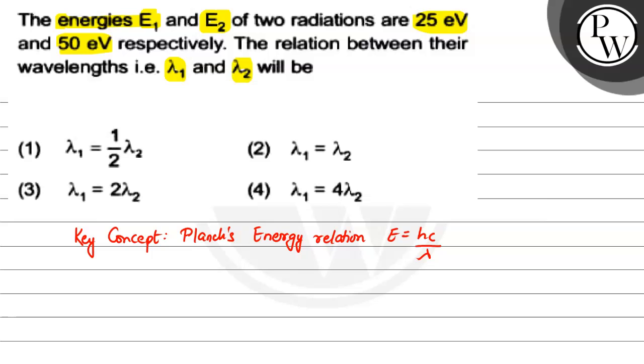So if we write from whatever data we have, energy 1 we have 25 electron volts, which we can use as hc by lambda 1. Similarly E2 we can use as 50 electron volts, which is equal to hc by lambda 2.